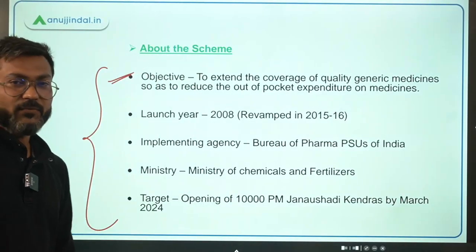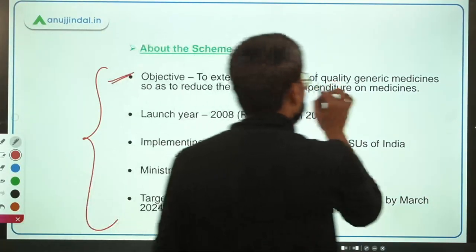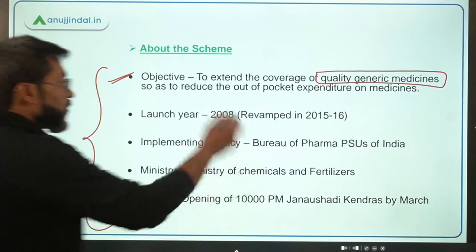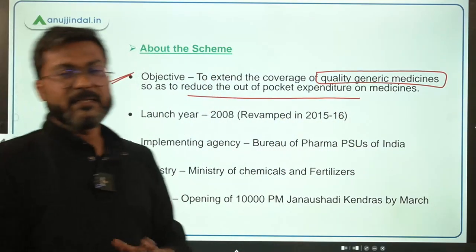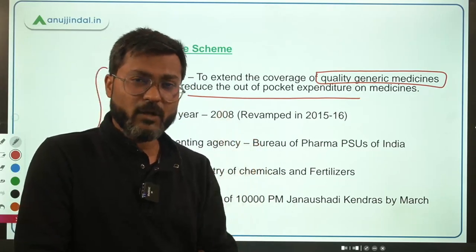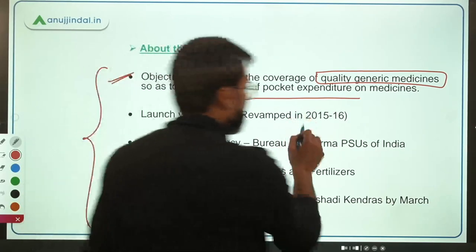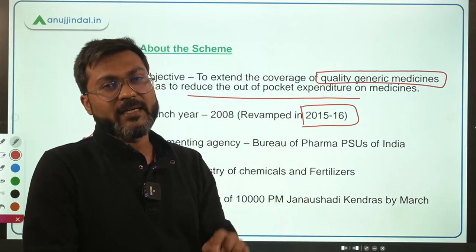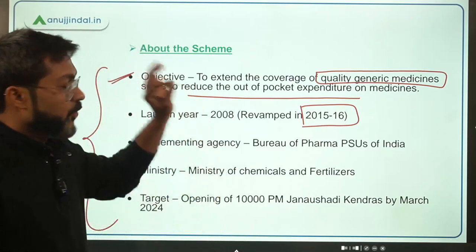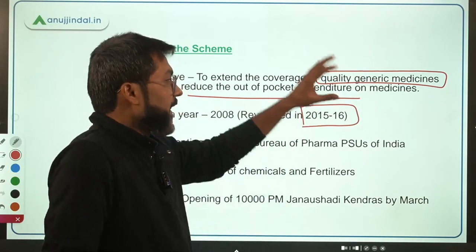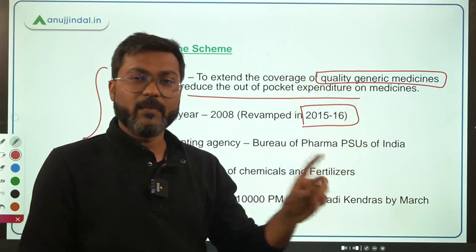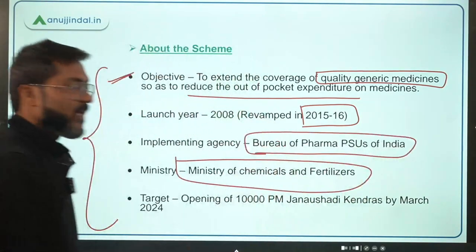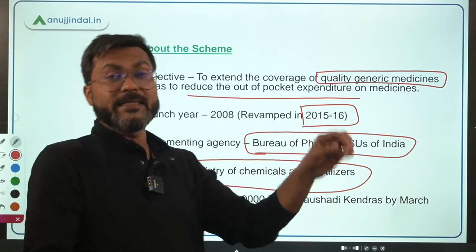The objective of this scheme is to extend the coverage of quality generic medicines so as to reduce the out-of-pocket expenditure on medicines. It was launched in 2008 but was revamped in financial year 2015-16. Please do not get confused — it is not being implemented by the Ministry of Health and Family Welfare. It is being implemented by the Ministry of Chemicals and Fertilizers through the Bureau of Pharma PSUs of India, which is the implementing agency.